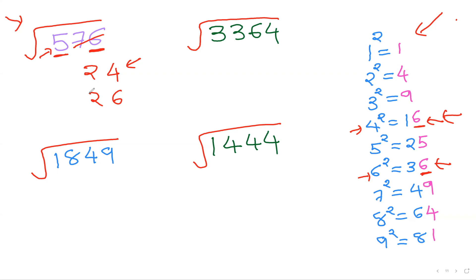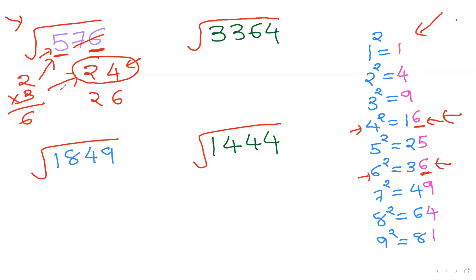Step three: decide between the two options. Take the first digit (2) and multiply it by the next consecutive number (3): 2 × 3 = 6. Compare that product to the number you had left over (5). Since 5 is smaller than 6, choose the smaller answer — so 24 is the answer. If the leftover number were bigger than 6, you'd choose the bigger answer. After a couple of practice questions, you'll solve these in two seconds.